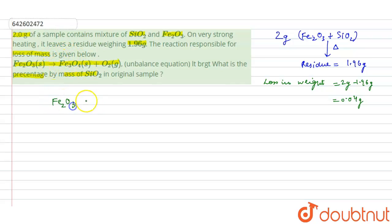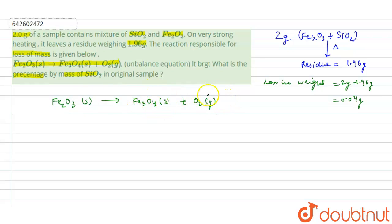The reaction is Fe2O3 (solid) changing to Fe3O4 (solid) plus O2 (gaseous). Since oxygen is in gaseous form, it will leave the sample, but Fe3O4 will remain in the residue. So the loss in weight is mainly due to the oxygen. If we calculate the amount of oxygen evolved, we can calculate the amount of Fe2O3 present in the sample. We will proceed by balancing the reaction.